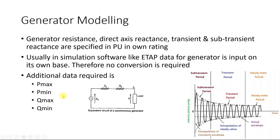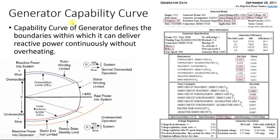You need to define the range in which the generator can change its output by providing the two extremes. Similarly, we need the voltage source information — specifically, the generator reactive capability limit — because reactive power is directly proportional to voltage. When we change the voltage, we are trying to change the reactive power of the generator. So we need to provide the values of Qmax and Qmin so that the generator can change its voltage within this range, which is given in the form of a generator capability curve.